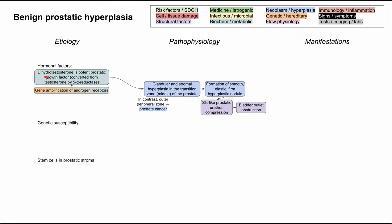One way that dihydrotestosterone is stimulated is with gene amplification of the androgen receptors, giving extra testosterone activity. In addition, estrogen — mainly estradiol — also stimulates prostatic hyperplasia. Estrogen is formed from the aromatization of testosterone in fat and muscle tissue, so you have more estrogen in people with obesity and more fat tissue, and more estrogen means more prostatic hyperplasia.